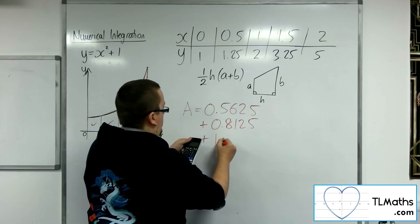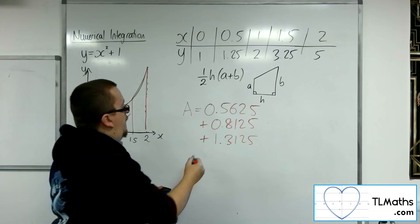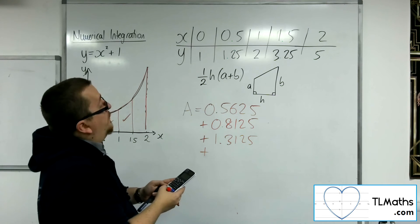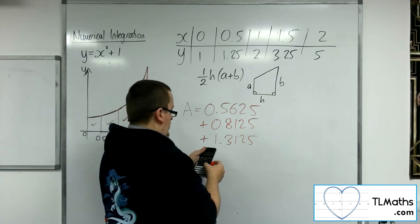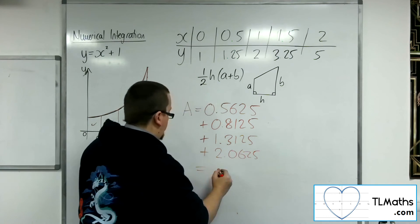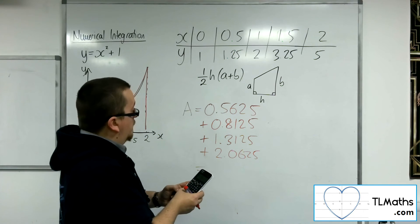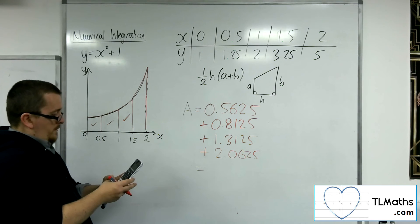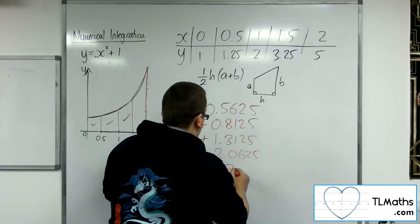So that gets us 1.3125, and then the final trapezium is 1 half times 0.5 times the first, 3.25, plus 5. That's 33 over 16, so 2.0625. Add all of those together, and we get 4.75.